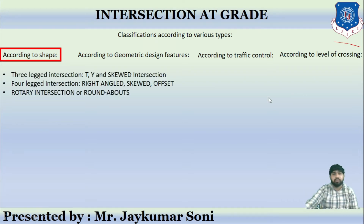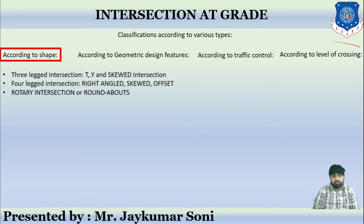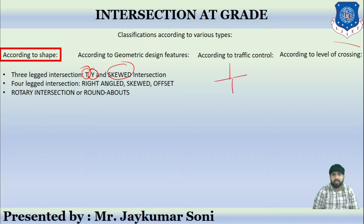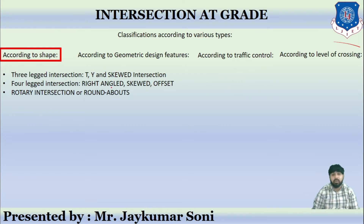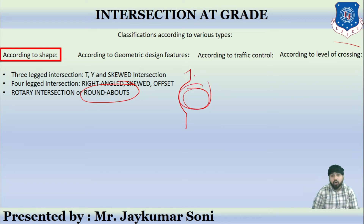According to shape, a three-legged intersection can be either a T-intersection, Y-intersection, or skewed intersection. For four-legged intersections, it can be a right angle, skewed, or offset type. There is also the rotary intersection or roundabout type. You may have heard the word 'roundabout' — whenever you cross any circle in Gandhinagar, the roundabout is also called as rotary intersection.